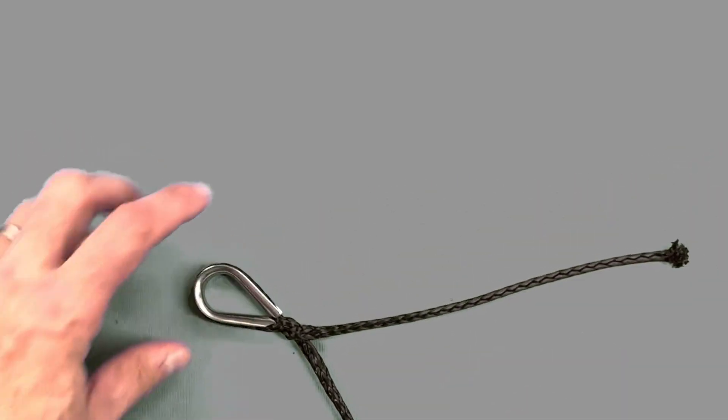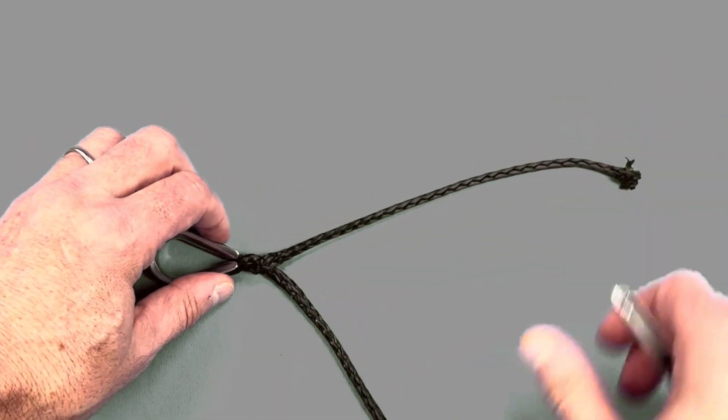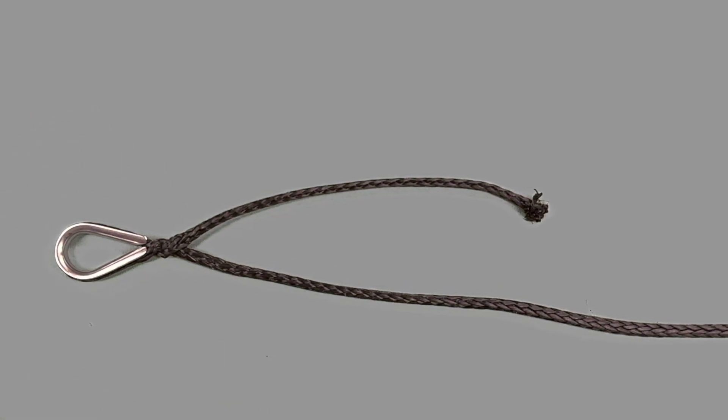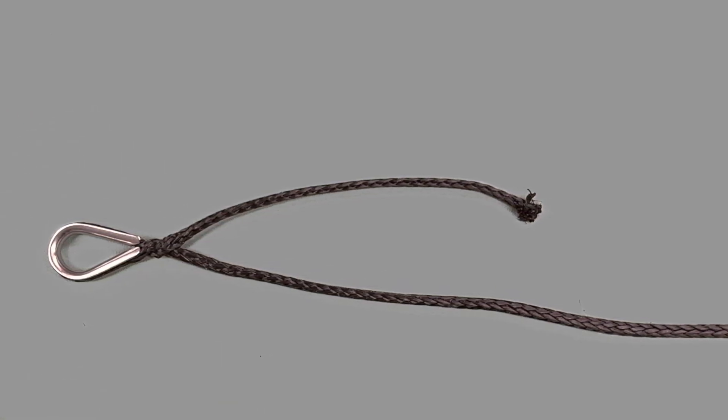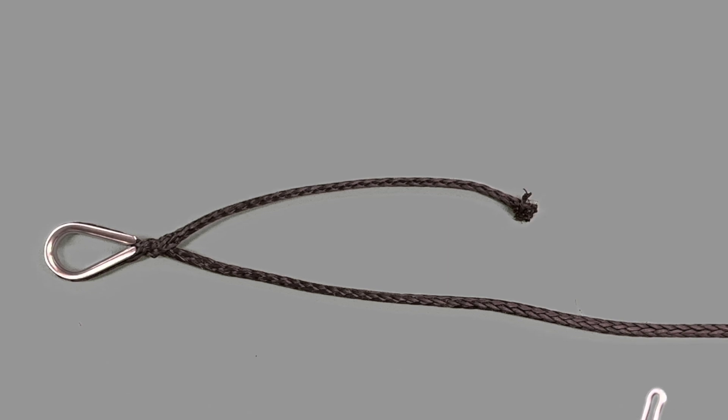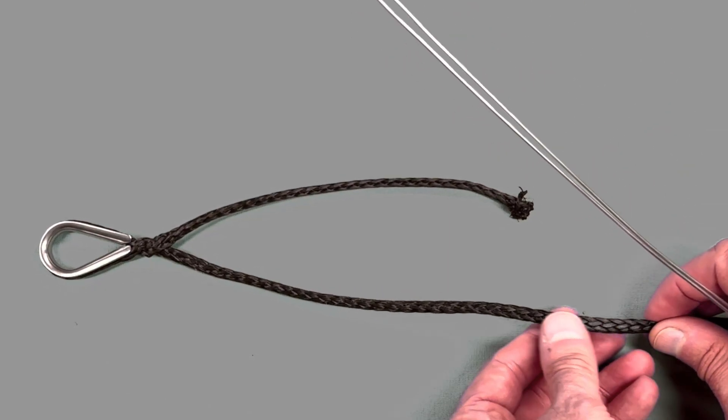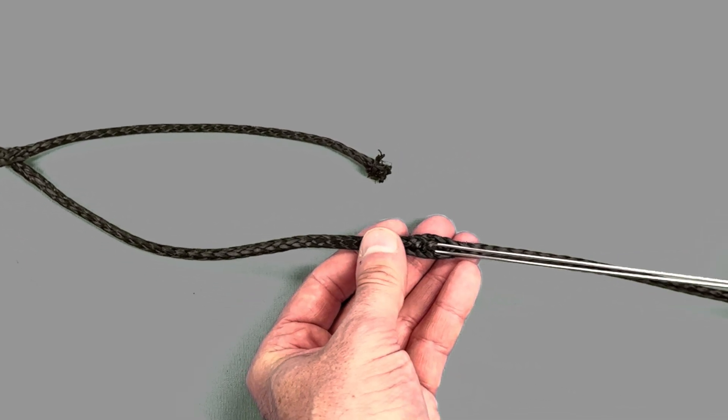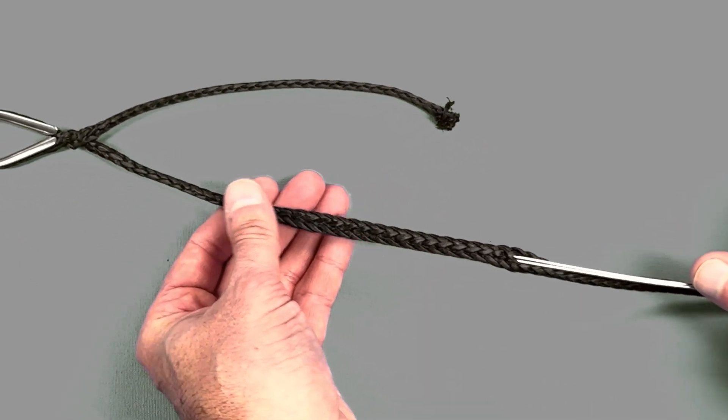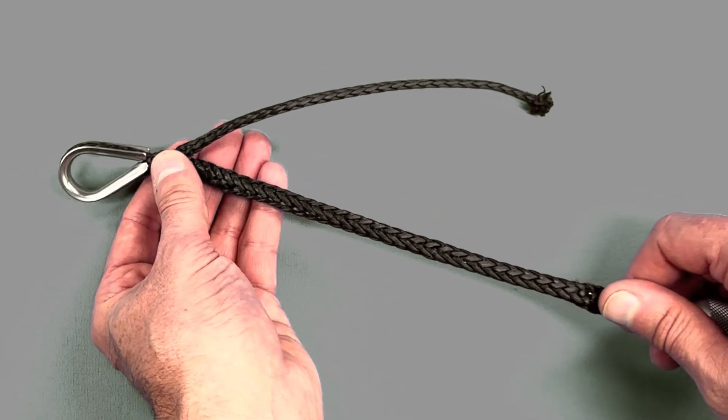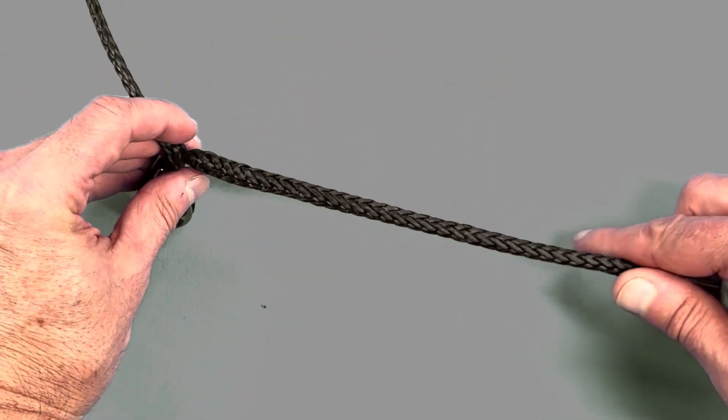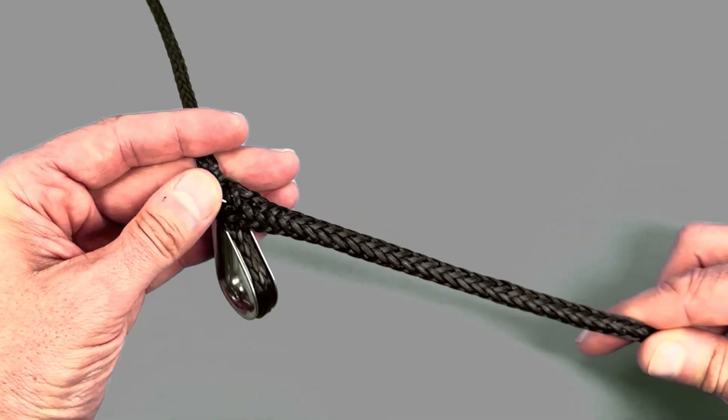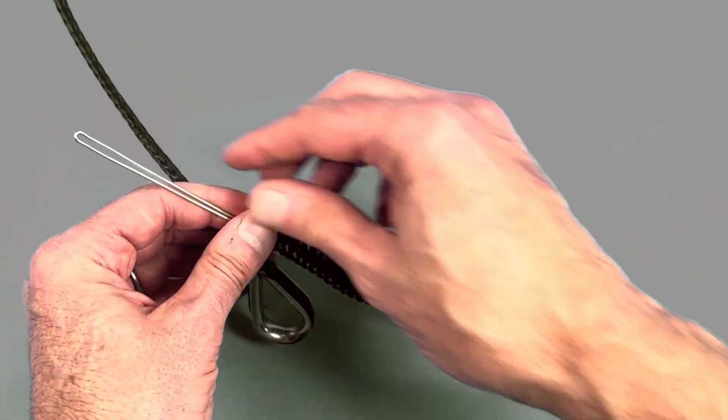At this point the thimble is locked into place. Now what you need to do is bury the tail into the standing end. The best tool to do this is the D-splicer. You want to make a hole a couple of inches past where the working end is sitting, move it all the way up as close to the Brummel splice as you can, and then pop it out the end.